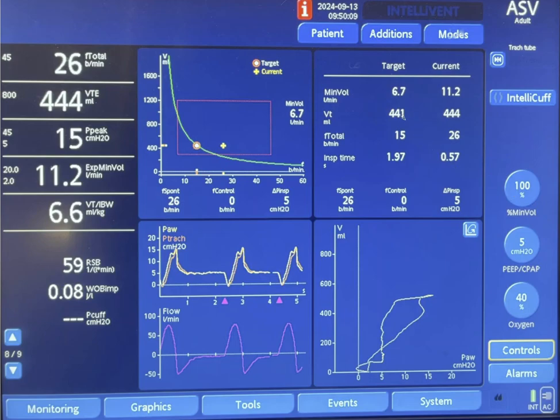Then the machine will take the ideal body weight for the patient which is 67 kg and multiply that by 100 ml and that will give you a targeted minute ventilation of 6.7 liters.